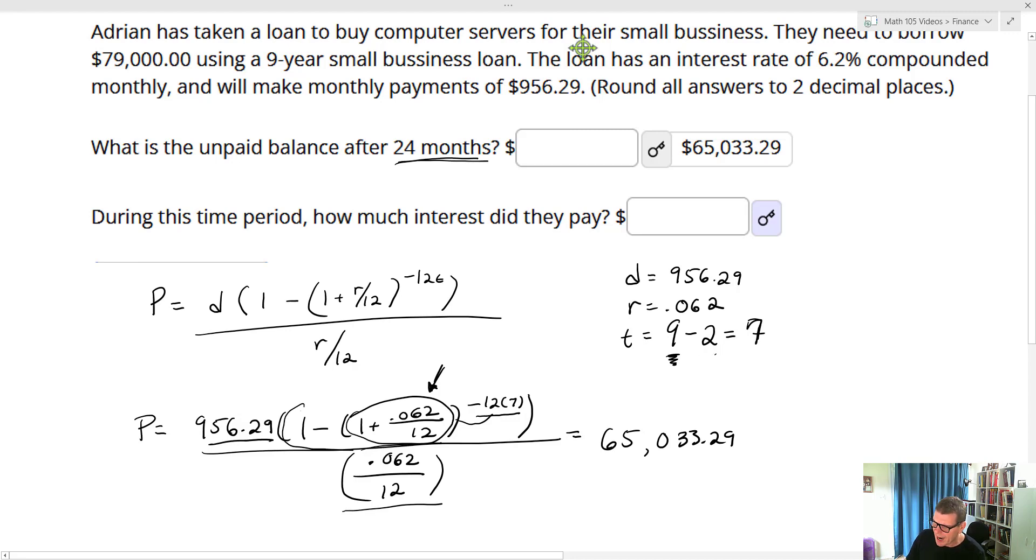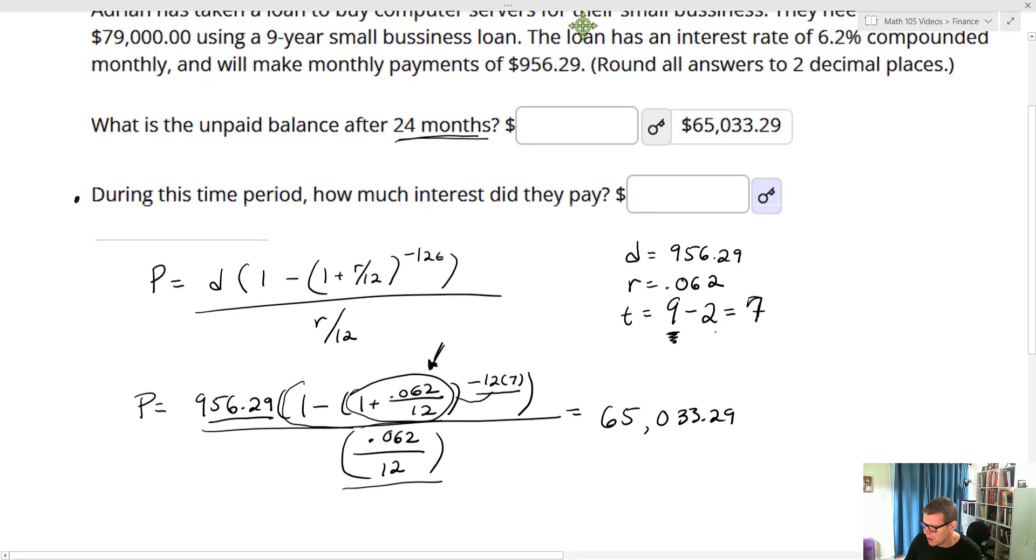Now the next question that I have, though, is during this time period, how much interest did they pay? So they didn't pay all the interest, right? They only paid a portion of it. And so we've got to figure out how much did they actually pay.